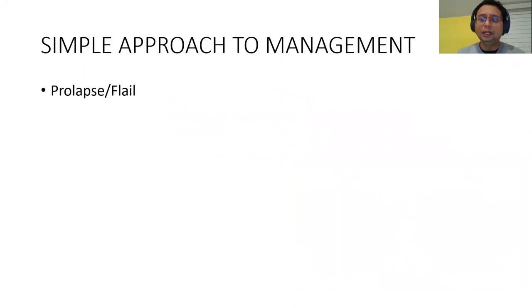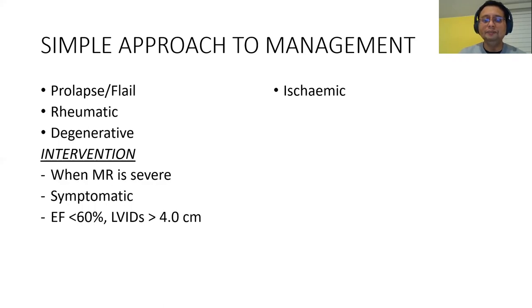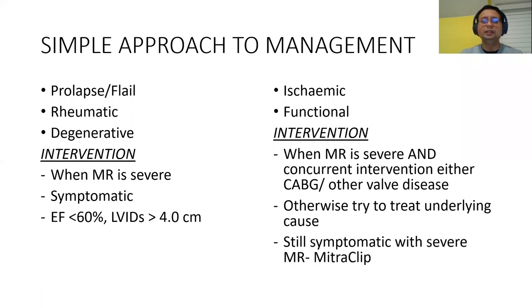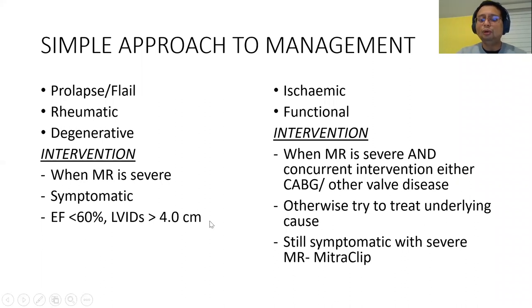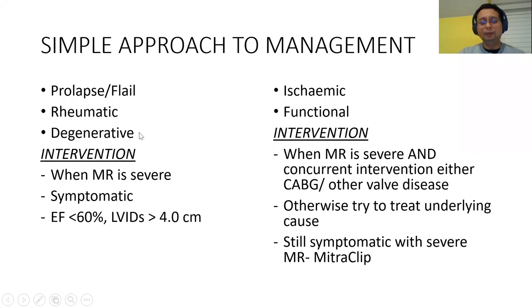For primary MR — prolapse, flail, rheumatic, degenerative — we only intervene when MR is severe. If the patient is symptomatic with severe MR, they go to the operating theater regardless of LV function. If asymptomatic, check LV function: if EF is below 60% or end-systolic dimension exceeds 4 cm, the LV is already decompensated — send for operation. For prolapse and flail, the operation is repair; for rheumatic and degenerative, most likely replacement. For ischemic and functional MR, the problem is the ventricle — ask what can be done to make the LV better first. Correct coronary artery disease with PCI or CABG. If there is a concurrent operable problem, operate and address the mitral valve at the same time.